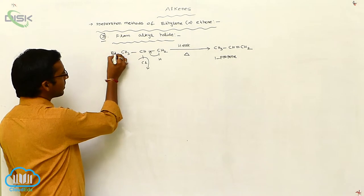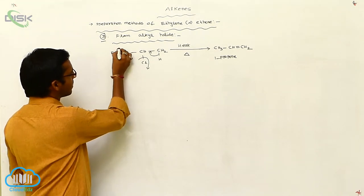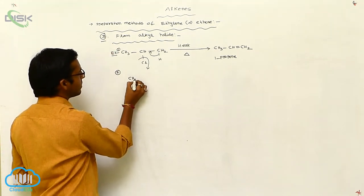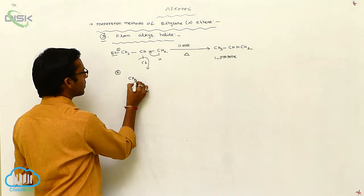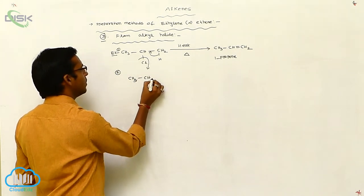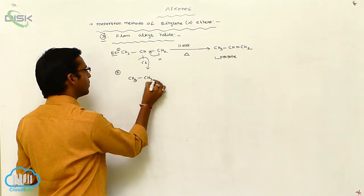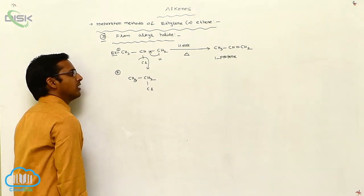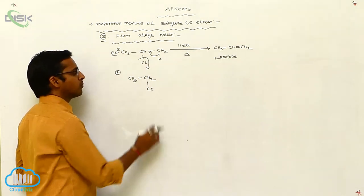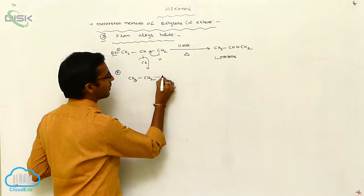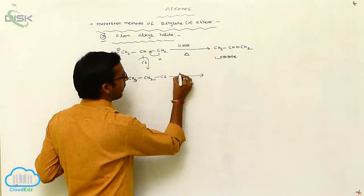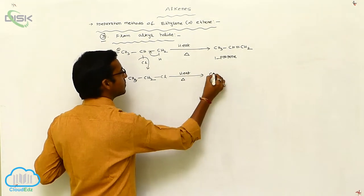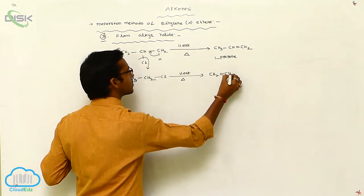Similarly, we consider another example: CH3, CH2, Cl. In the presence of E2, through elimination reaction, it gives CH2 double bond CH2.